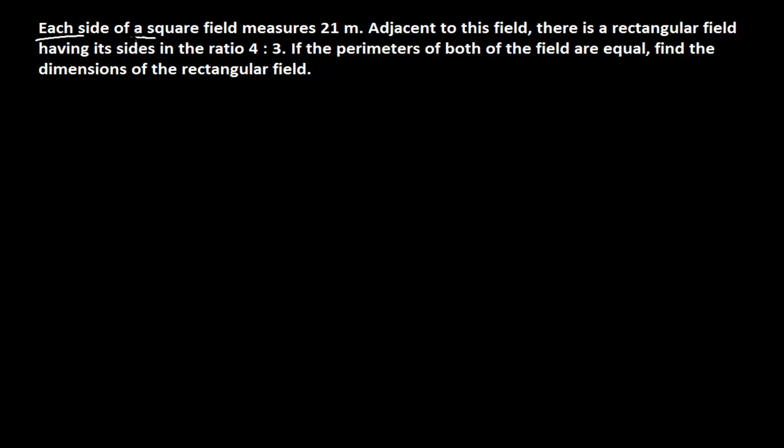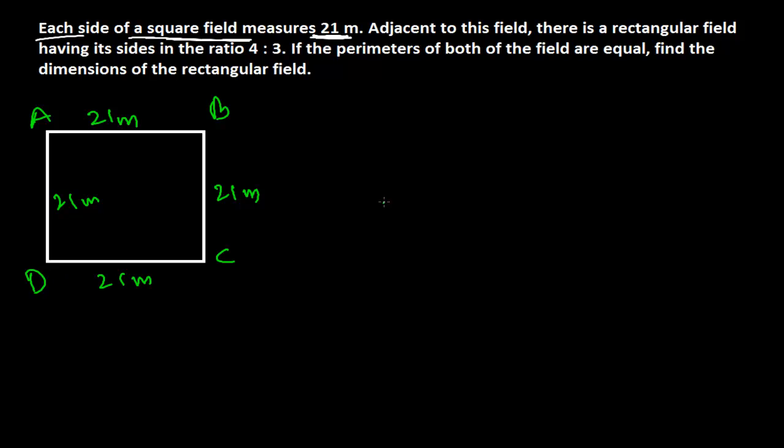So here each side of a square field measures 21. First I need to make a square field. Well, this is my square field and we have got the dimensions. The side of this square is 21 meter. So all the sides will be 21 meter. Let me give the name A, B, C and D.